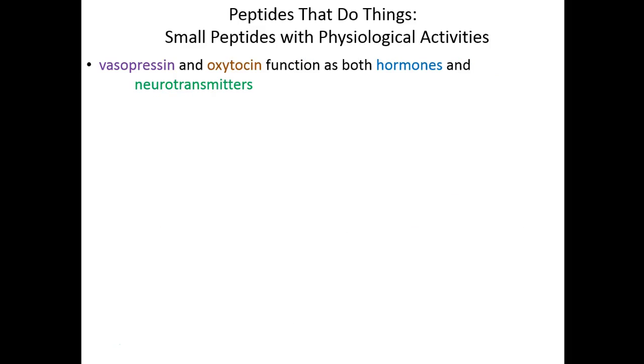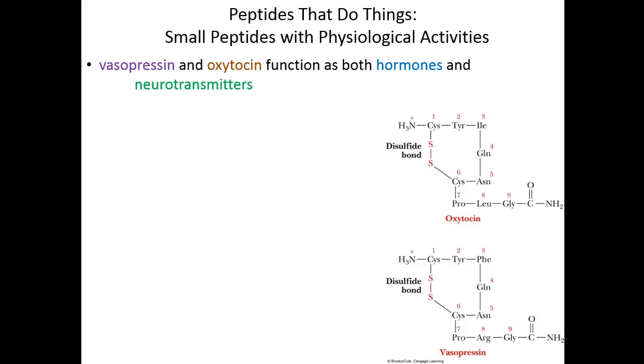Vasopressin and oxytocin are two things you may have heard about in other classes. They function as hormones and neurotransmitters. Here's oxytocin—a simple chain of nine amino acids. And look at that, a disulfide bridge between two cysteines. This amino acid chain goes from N to C direction.